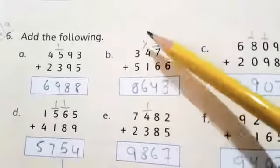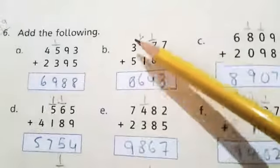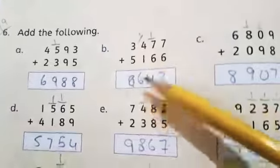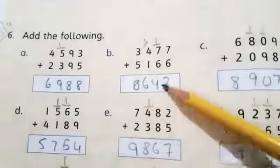Now 4, 5 and 6. 5 plus 3, what comes after 5? 6, 7, 8. The answer is 8643.